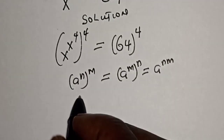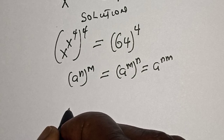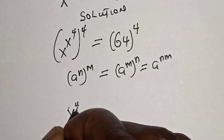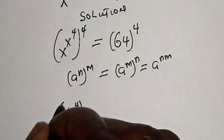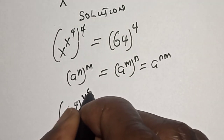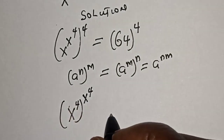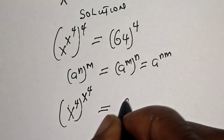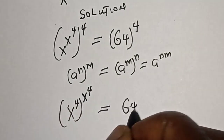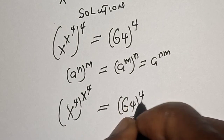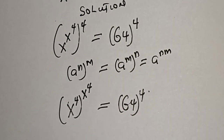Then this becomes s raised to power 4, raised to power s raised to power 4, is equal to 64 raised to power 4.